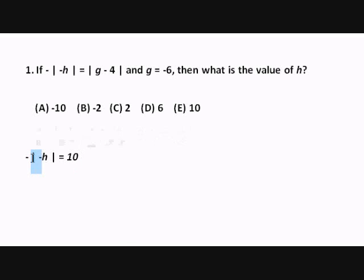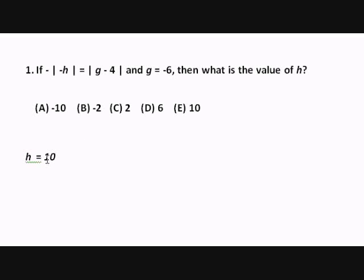And negative h becomes just h. Now, for the love of God, do not stop here. Don't fall for it. Instead, realize that they don't ask you for the value of negative h — they ask you for h. So what we have to do is go ahead and switch the signs. So negative h becomes h, which means 10 becomes negative 10. And we've got what we want. The correct answer is choice A.